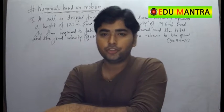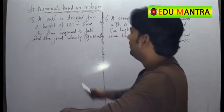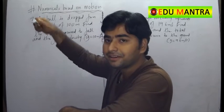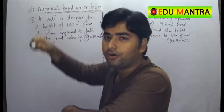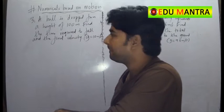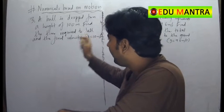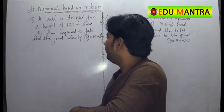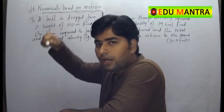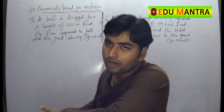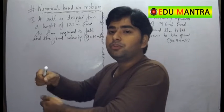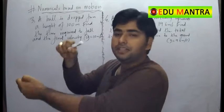Next two questions from motion. A ball is dropped from a height of 100 meters — it is released under gravity in free fall. We need to find how much time it will take to reach ground level from 100 meters, and what velocity it will have just when it touches the ground.